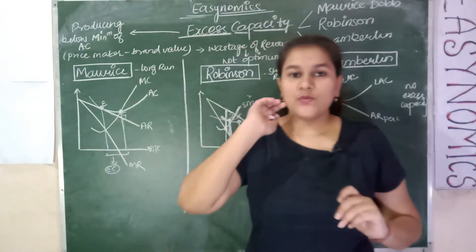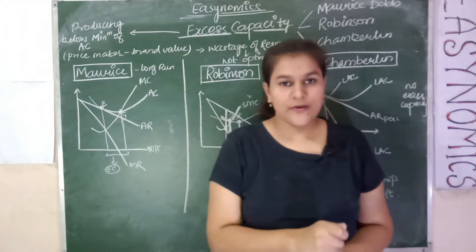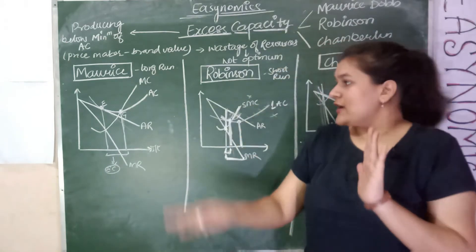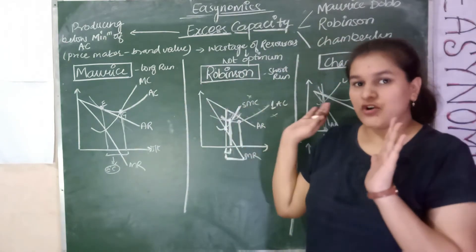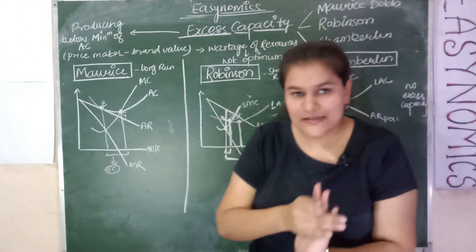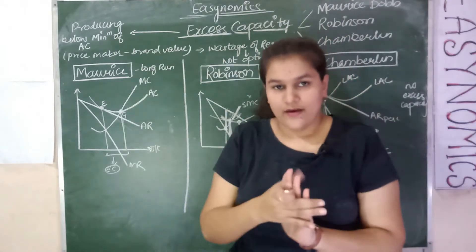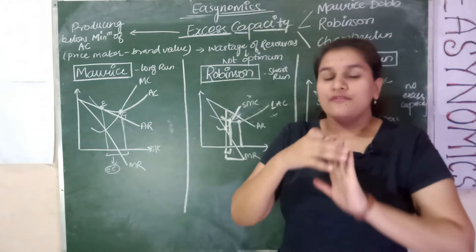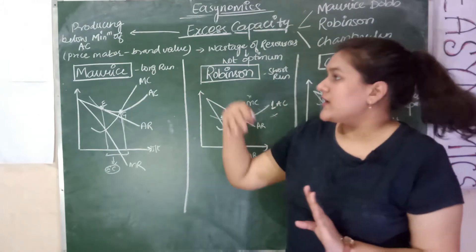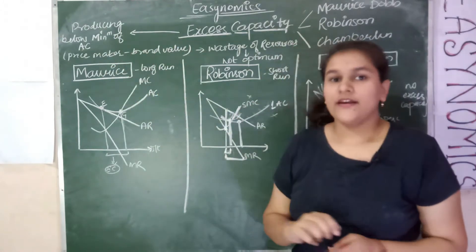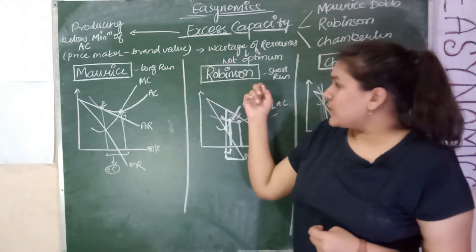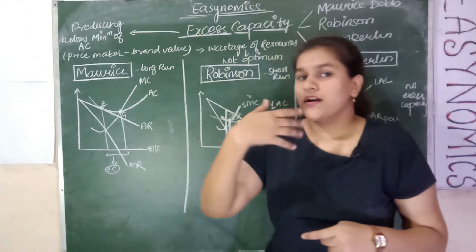Excess capacity was explained by three economists: Morris Dorp, Robinson, and Chamberlain — each explained it in their own way. Excess capacity is a term used where in imperfect competitive markets, firms operate at a level below the minimum of average cost even while earning normal profit. It means there is a wastage of resources in which optimum utilization of resources does not happen.